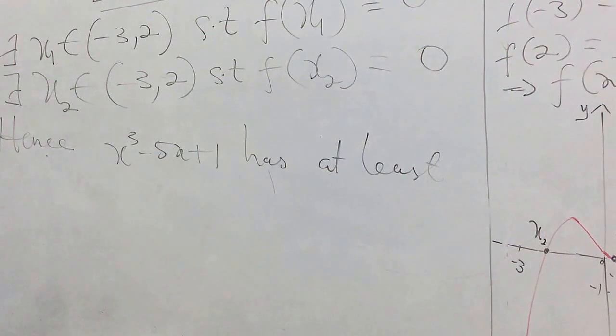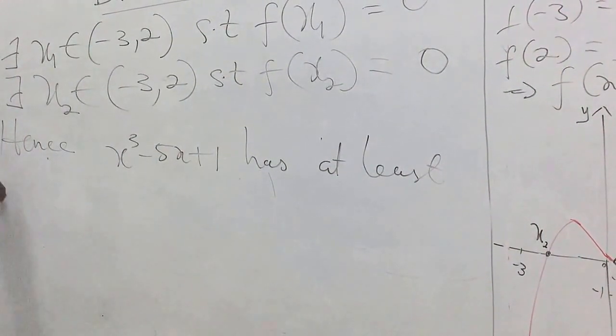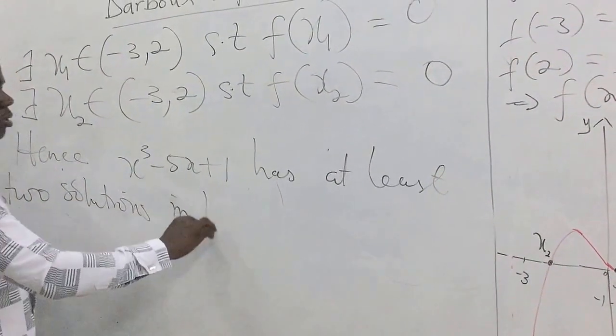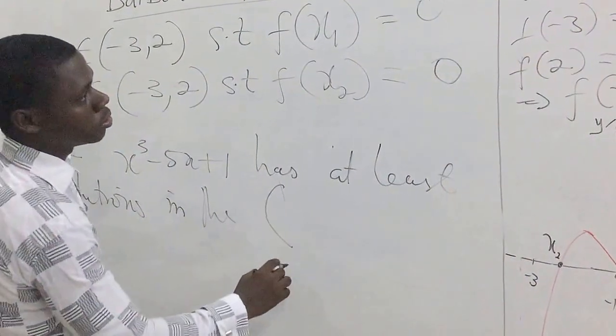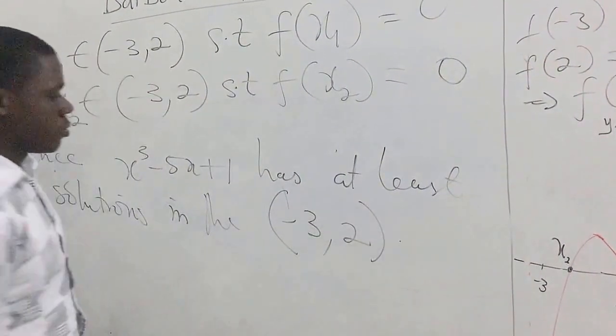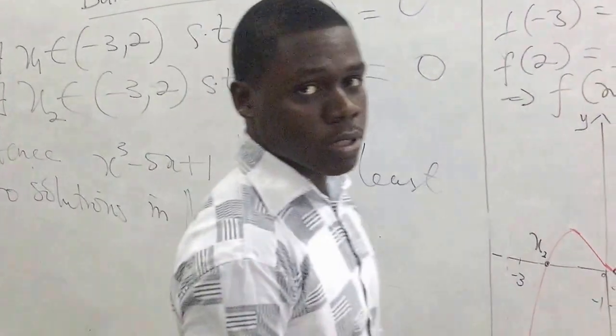Once you have two or more, that has satisfied that there are two solutions in the interval (-3, 2). That is it, we finished the proof by Bolzano's property.